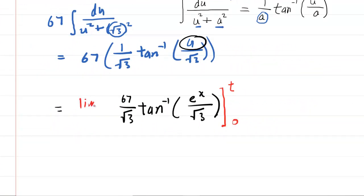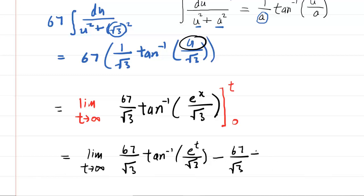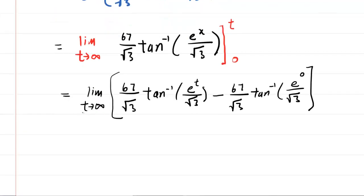We're going to do the limit as t approaches infinity. Let's plug in the upper bound. We'll still have our limit, and then we're going to have 67 over radical 3 multiplied by the inverse tangent of e to the t over square root of 3. And then we plug in our lower bound, so we're going to have minus 67 over radical 3, inverse tangent of e to the 0 over square root 3.